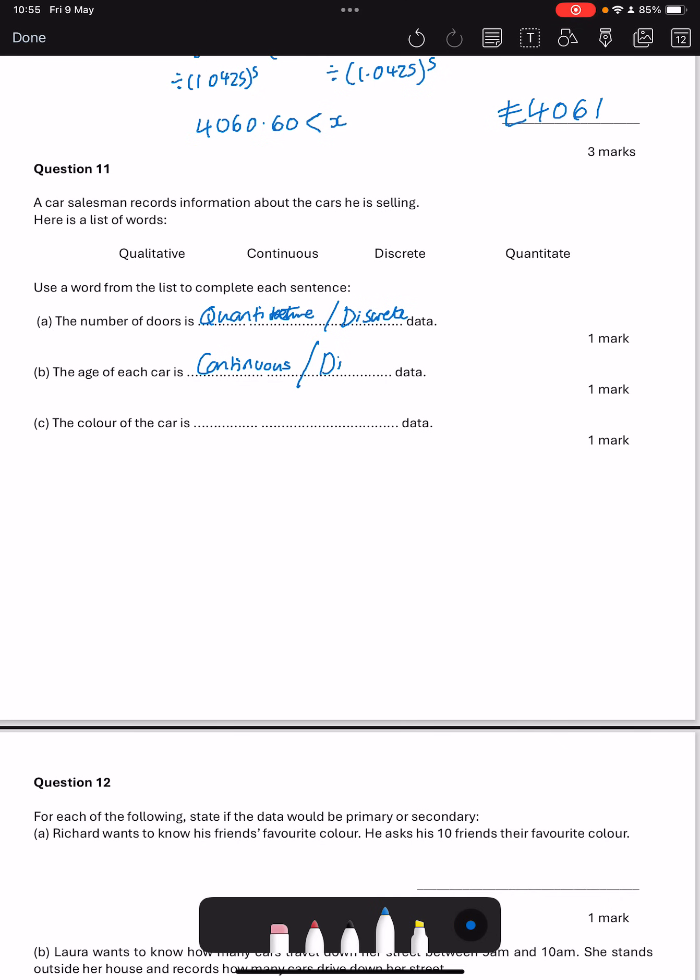And it's a number as well. So that is discrete. Both of those would be fine. The colour then, colour is qualitative because it's a word and it's also discrete. It's an exact thing, but I think qualitative would be a better answer for that one.